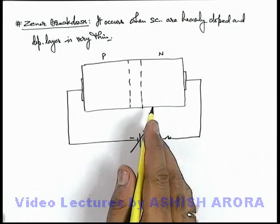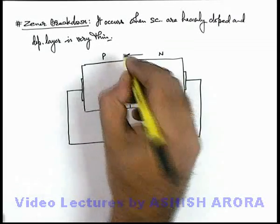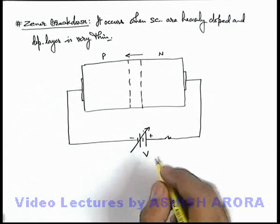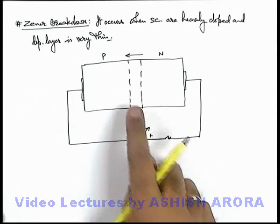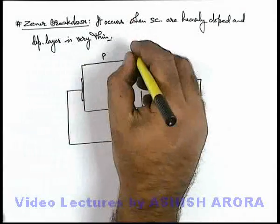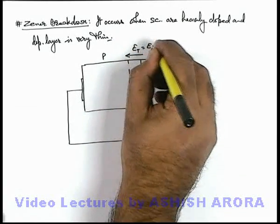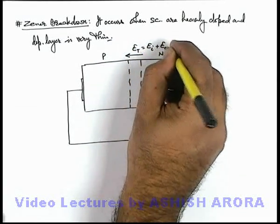that electric field due to p-type and n-type semiconductor exists from right to left. And if the external voltage is reverse biased for the junction, then this will increase the electric field. So the total electric field will be E_internal plus E_external, which is in the opposite direction.